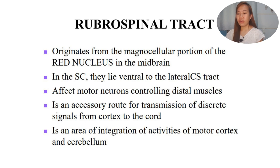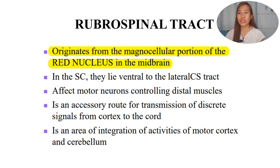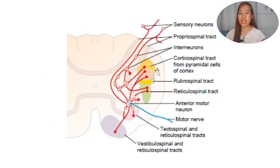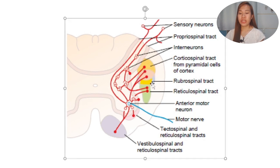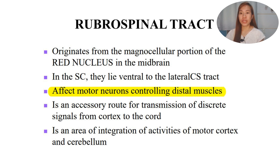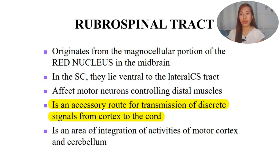We have the rubrospinal tract. 'Rubro' means red, going to the spine - rubrospinal tract. They originate from the magnocellular portion of the red nucleus in the midbrain. In the spinal cord, they lie ventral to the lateral corticospinal tract, meaning they lie anterior. It affects motor neurons controlling distal muscles. It is an accessory route for transmission of discrete signals from the cortex to the spinal cord - not directly to the spinal cord, but going first from the cortex to the red nucleus and then from the red nucleus to the spinal cord.